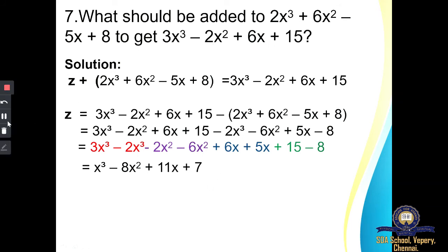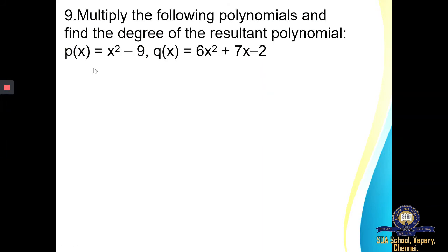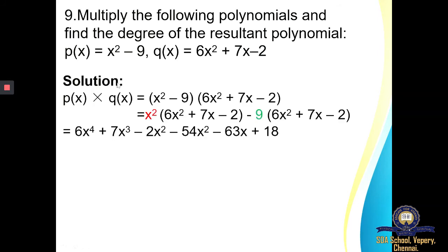Moving on to question number 9: multiply the following polynomials and find the degree of the resultant polynomial. P of X and Q of X are given. We are supposed to multiply P of X and Q of X. P of X equals X square minus 9, and Q of X equals 6X square plus 7X minus 2. I am supposed to distribute X square and minus 9: first I will multiply X square with each and every term of this polynomial, then I will multiply minus 9 with each and every term.